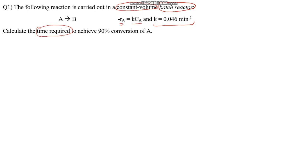The rate is equal to kCA, and the rate constant k is equal to 0.046 per minute. You need to calculate the time t required to achieve a conversion of 90 percent. You also need to memorize the notation for different factors — for conversion we use X. So conversion of A is equal to 0.9, which is equivalent to 90 percent.